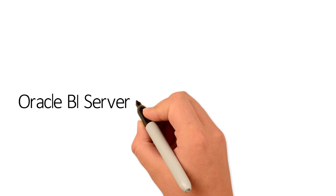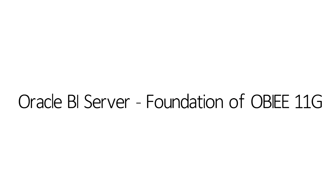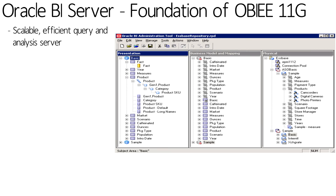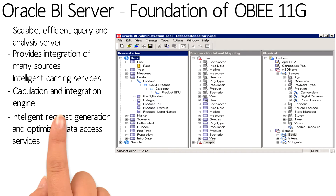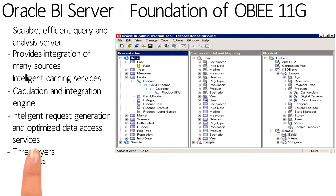The BI server is the core to OBIE. It provides a scalable and efficient query analysis, and integration to many data sources within the physical layer, which is on the right-hand side of the screen. The intelligent caching allows for quicker query retrieval. The calculation and integration allows for consistent data definitions to be developed in the business and modeling layer. The intelligent request generation, optimized to those data sources, is also managed in the business modeling and mapping layer.